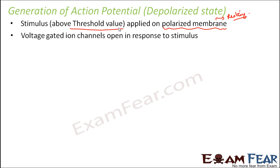If somebody touches you so slightly that you don't even notice, the stimulus is below the threshold value. When the stimulus is above the threshold value, only then the response will be observed. The voltage-gated ion channels will open. These are ion channels which allow specific ions to pass, but they are voltage-gated — they do not remain open always. They open only when a stimulus above threshold value is applied; rest of the time they remain closed.